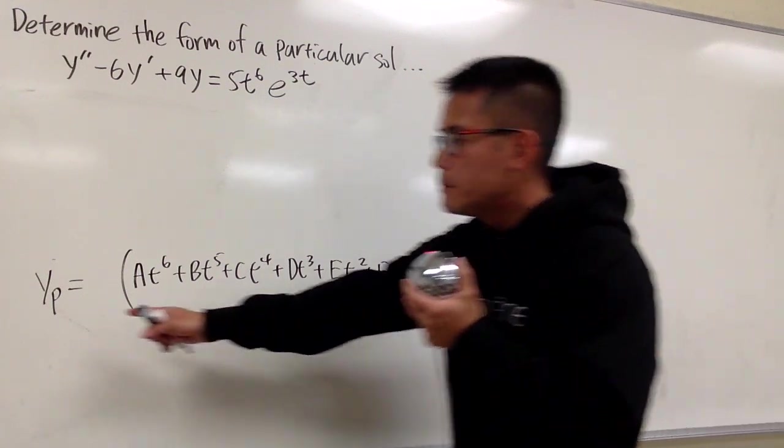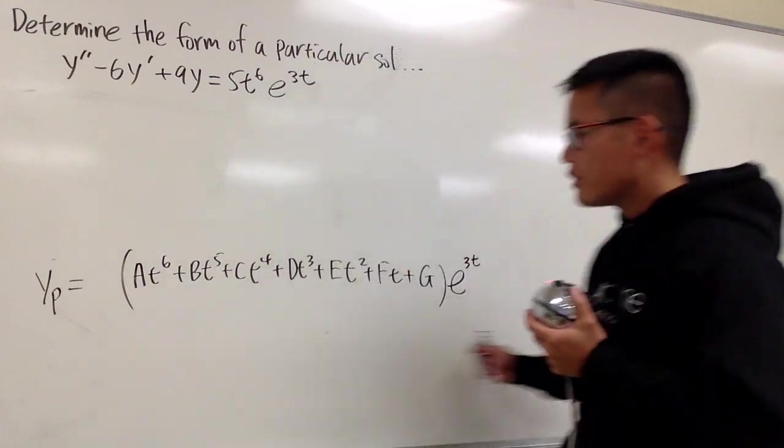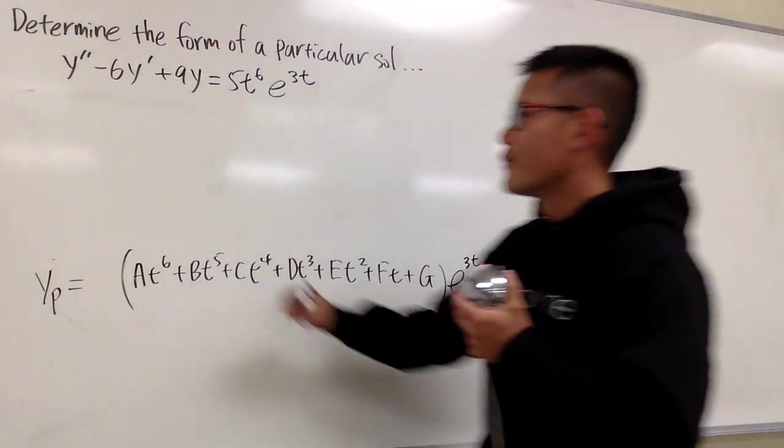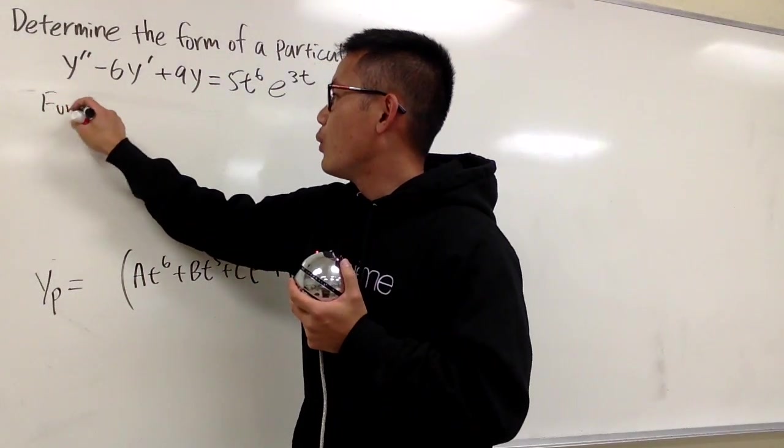And you have to be sure that yp, all this term right here, have to be linearly independent than yh. So you have to find out what yh looks like.